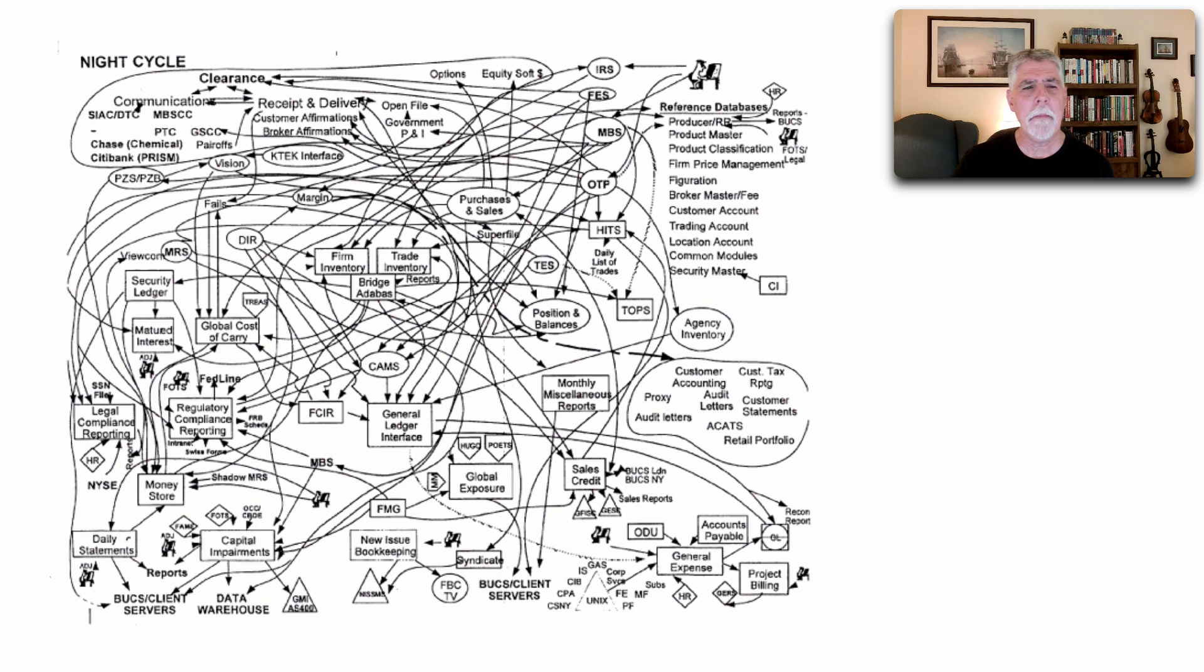For example, here's an actual artifact of the major information flows of the back-end settlement systems of one of the world's largest banks. And one of the things that we unfortunately do as architects is make things overly complex.